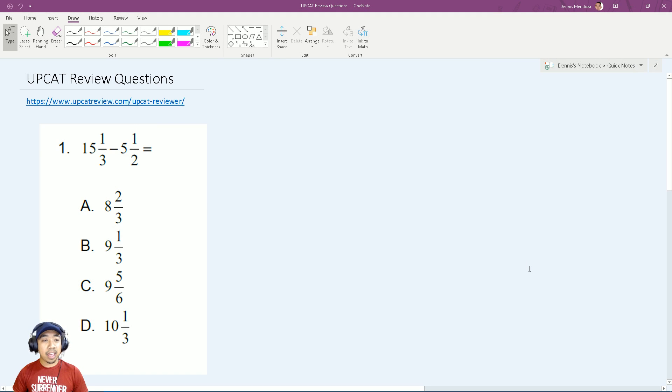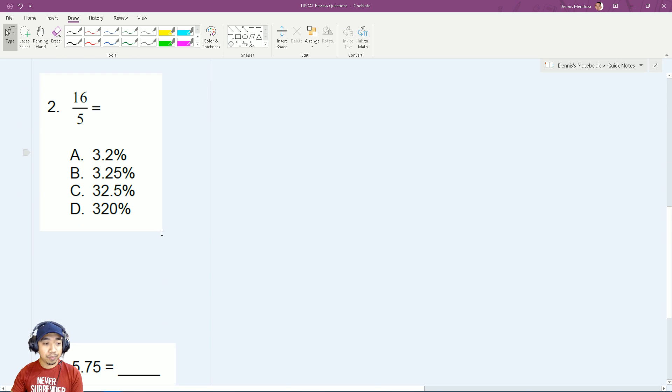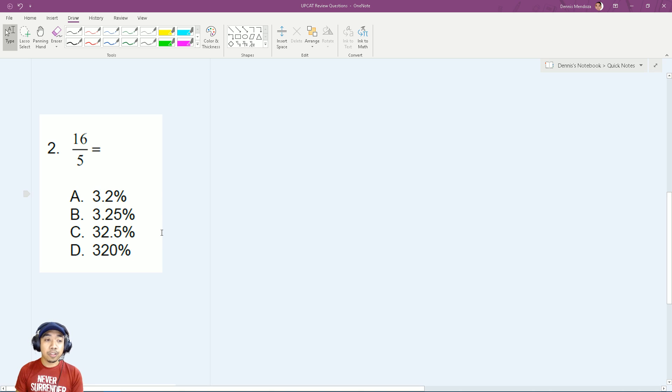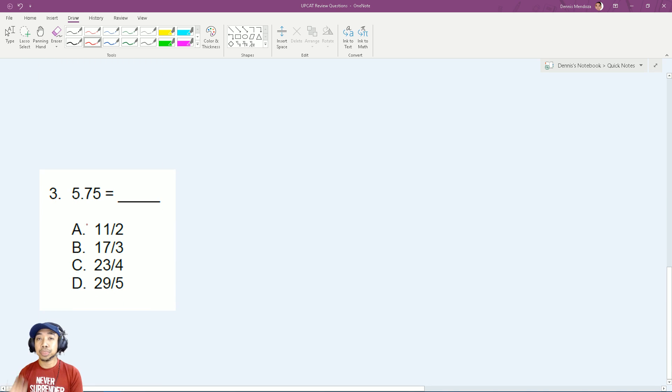We have fraction on the first part. For my guess, my guess for this particular question: 15 and one-third minus 5 and one-half is supposedly this. And then number two, 16 over 5, let's guess it must be somewhere here. And for number three, my guess would be this one.